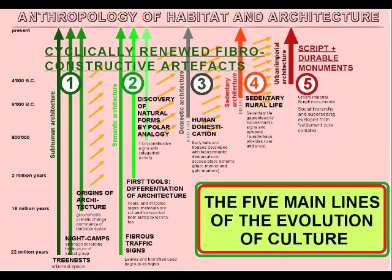Architectural anthropology works with five lines: subhuman architecture — that is, nest-building behavior of great apes; semantic architecture with fibrous signs; domestic architecture of huts and houses; sedentary architecture of permanent villages; and urban imperial architecture of stripped and durable monuments — history.